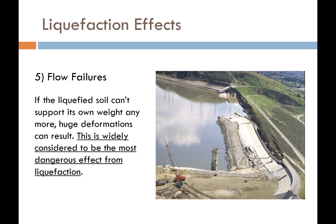Flow failures are the fifth effect — and the scary one. If the liquefied soil can't support its own weight and it's on a slope, usually equal to or greater than a 6-degree gradient, you can see dramatic and very large soil deformations. This type of deformation is widely considered to be the most dangerous of all the effects of liquefaction, because anything located downslope of the failing ground can get buried. In the case of the Lower San Fernando Dam, there's a city right below the dam where the water could have easily flooded it.